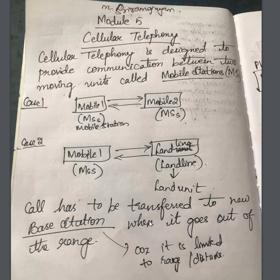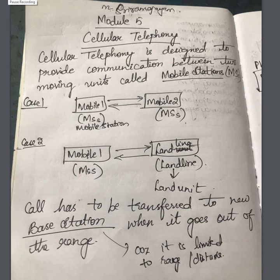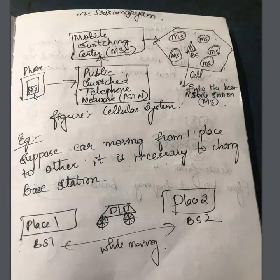We have two concepts: mobile station and base station. The base station is the one that covers the broader area, while mobile stations are smaller units within that area. Suppose someone is moving from one state to another — the base station has to be changed. The base station is the bigger one covering the area, and mobile stations operate under it.